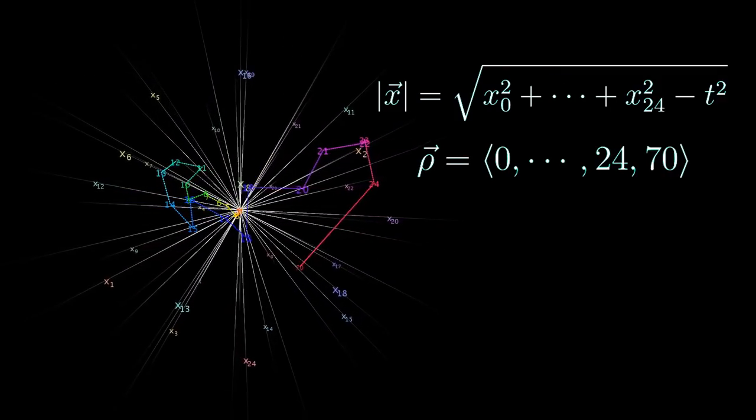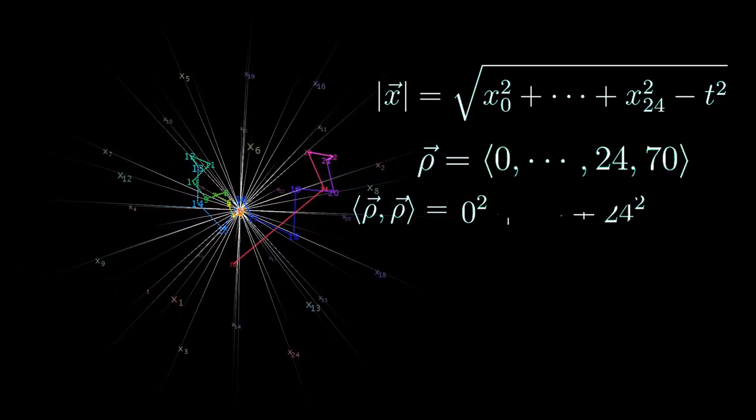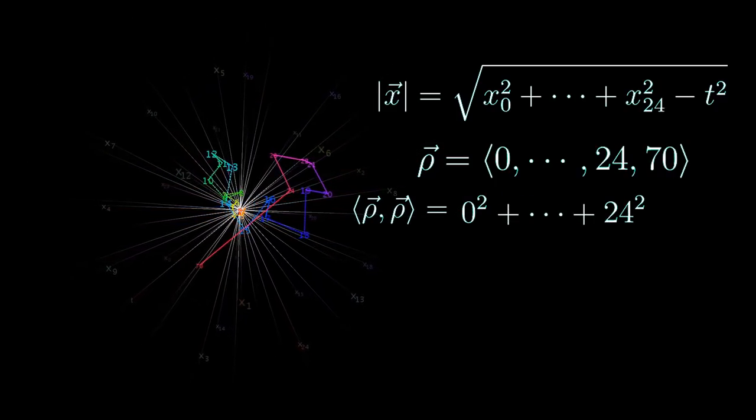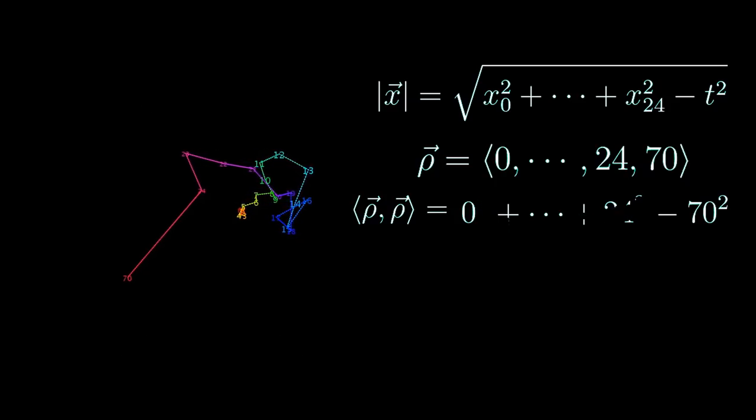This vector has the following funny property. The inner product of rho with itself is equal to 0 squared plus 1 squared and so on plus 24 squared minus 70 squared. And by some freaky coincidence this is equal to 0.